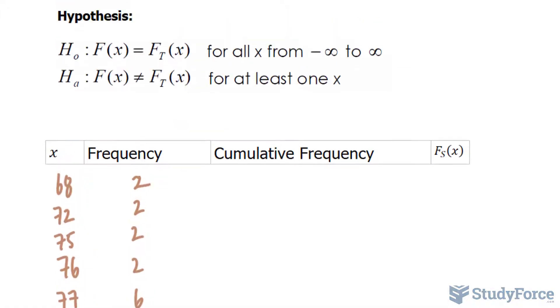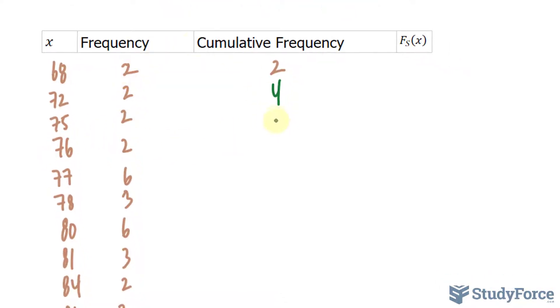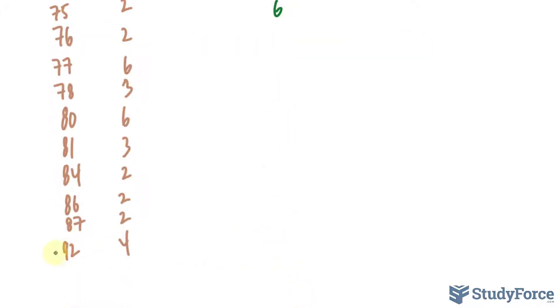The frequencies are written. The cumulative frequency is taking into account how many values are 68 or less—that is 2. How many values are 72 or less? We add 2 and 2 together, that's 4. How many values are 75 or less? 2 plus 2 plus 2 is 6. If you do this correctly, by the very end, you should have 36. So let me write these down for you.